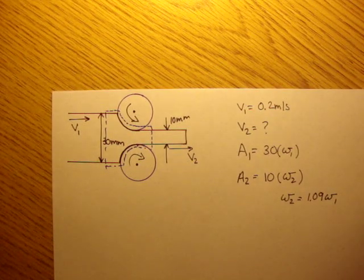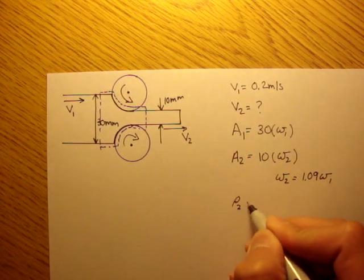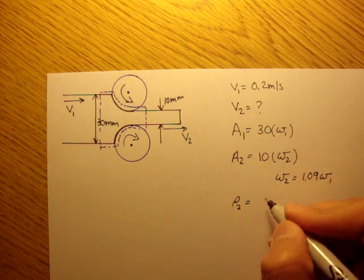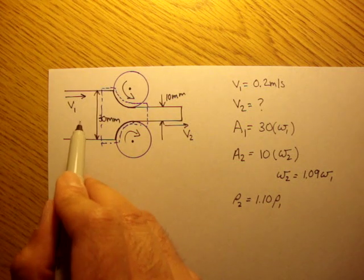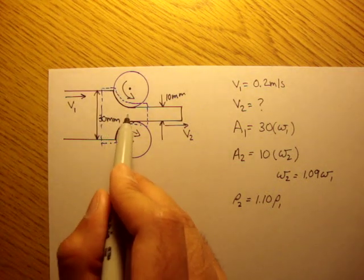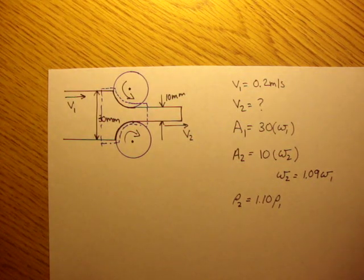It's in the problem statement. This liquid is not homogeneous because the density changes. It told us that the density gets 10% more dense. So density, which we call rho, rho 2 is actually equal to 10% more of rho 1. The density that comes into this control volume gets denser by 10% of the original density.